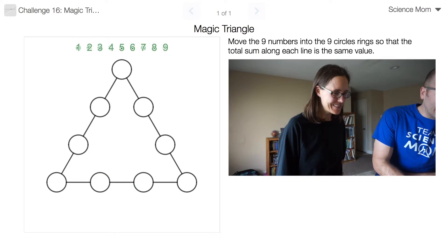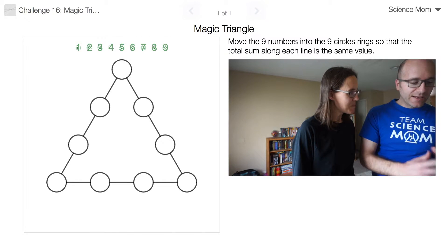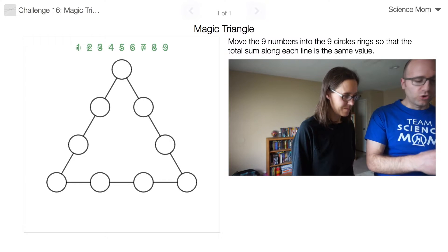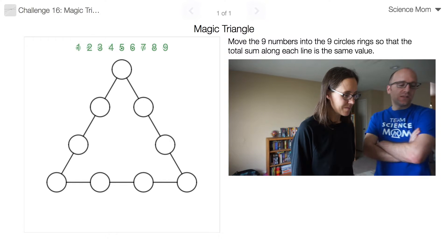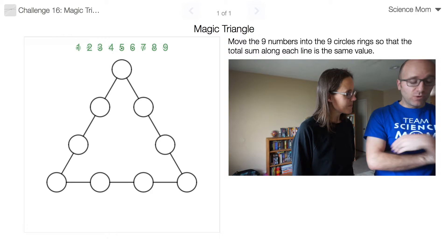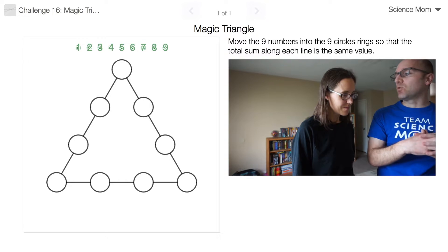Math Dad here with challenge problem number 16 for Science Mom. Are you ready? I'm ready. Okay. In this problem, I'm calling it the magic triangle. I'm giving you nine numbers, one through nine, and a little figure here. You have to drag the nine numbers into these nine circles, and in the end we need the sum total along each of the three sides to be equal.